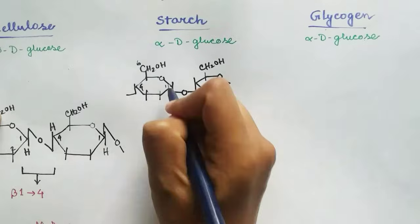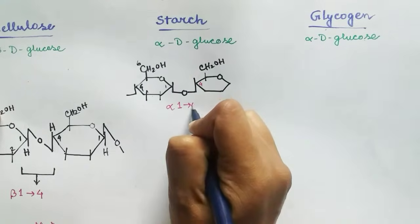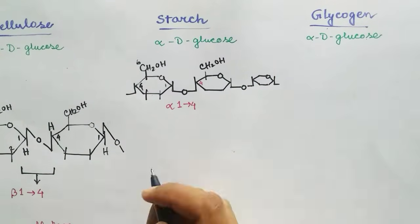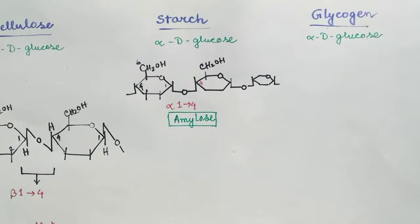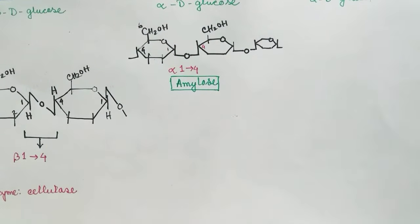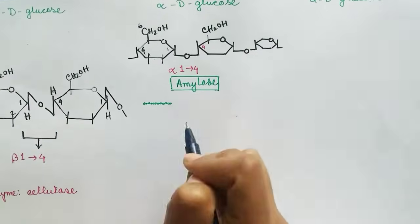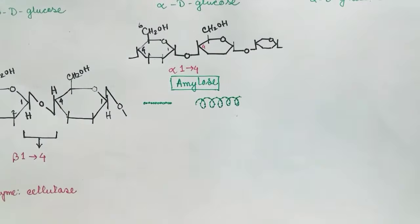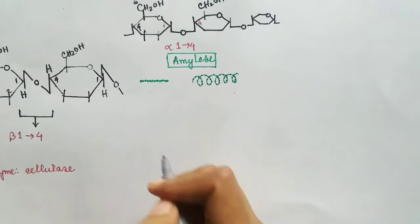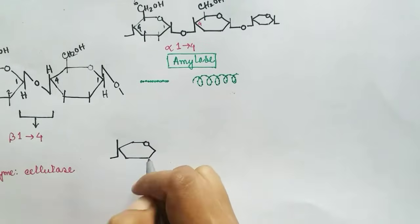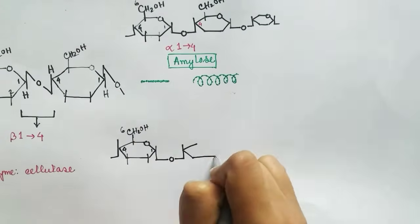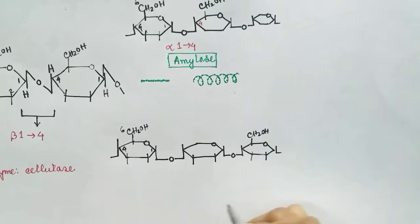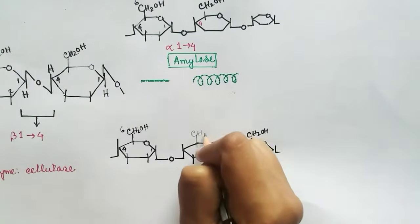Next is starch, which is also made by plants. It is a polysaccharide of alpha D glucose, so all the monomeric units are alpha D glucose, and the bond is between the alpha one anomeric carbon and the fourth carbon of the next alpha glucose. Starch has two types of forms: a linear form called amylose and a branched form called amylopectin.